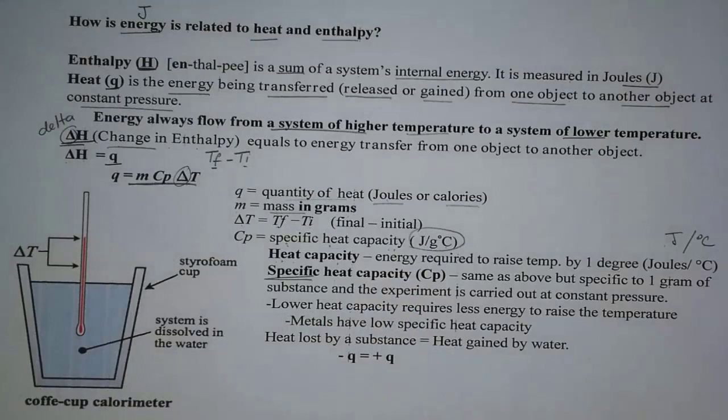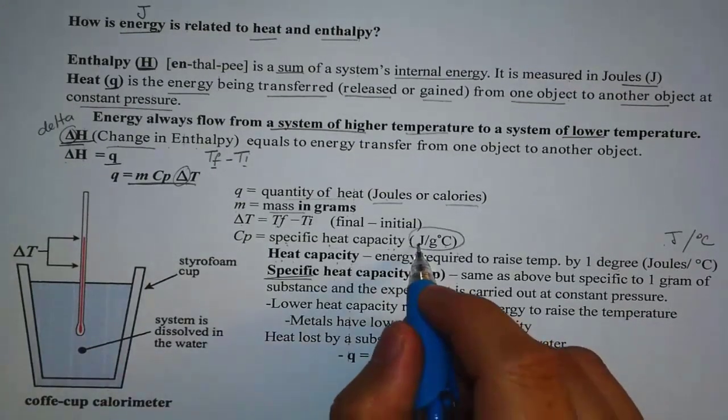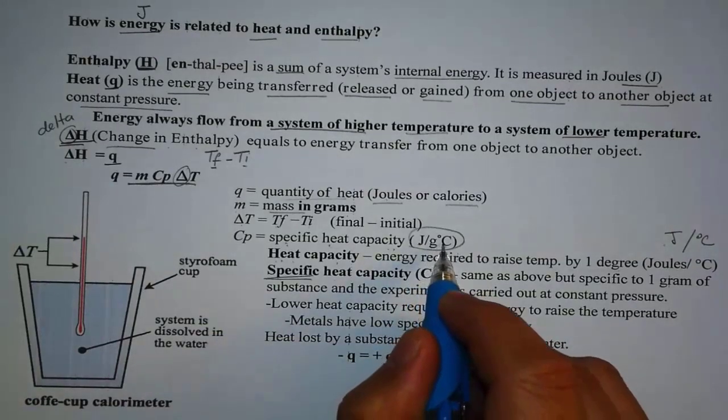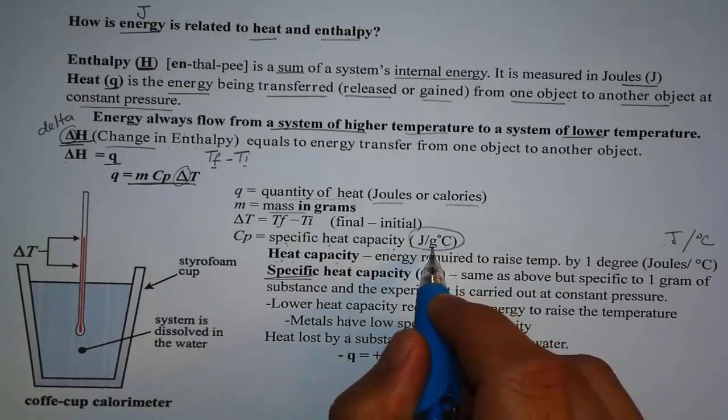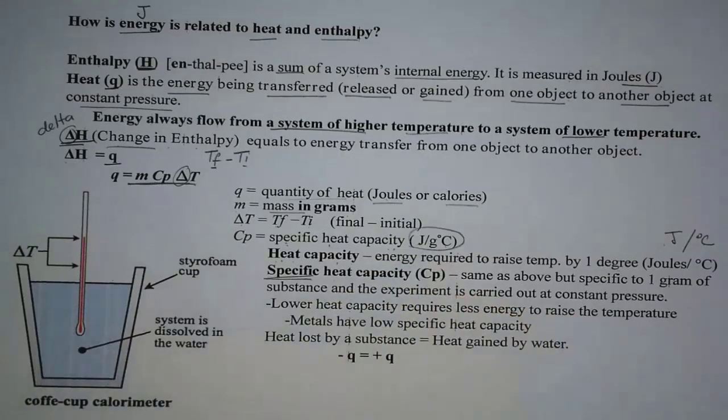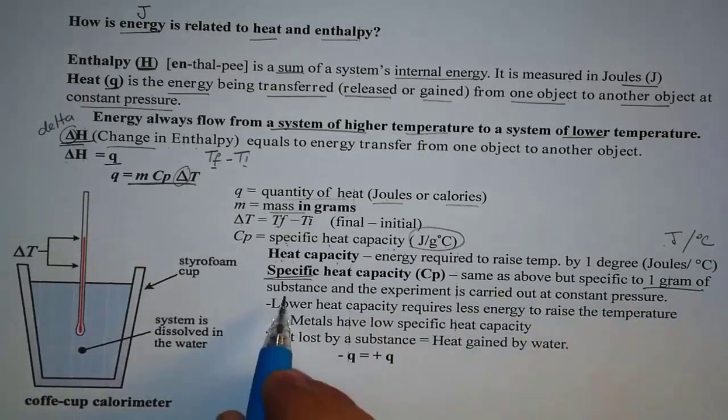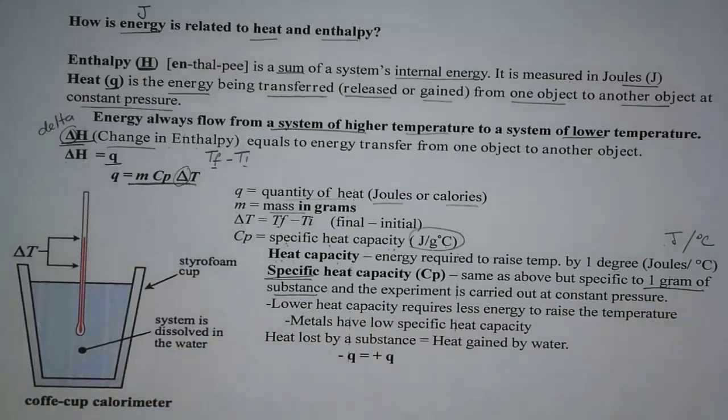Basically saying that different objects have different heat capacities. That's because it requires different amounts of energy to raise one degree Celsius for that one gram. So keep that in mind. It's per one gram of the substance. That's very important. So that's specific heat capacity.